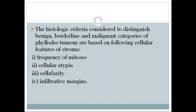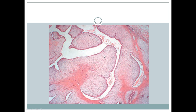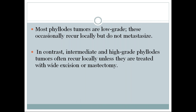The categories are distinguished based on stromal cellular features: frequency of mitosis, cellular atypia, cellularity, and infiltrative margins. More frequent mitosis, more cellular atypia, higher cellularity, and infiltrative margins indicate malignant phyllodes tumor. Less mitosis, less atypia, less cellularity, and absence of infiltrative margins indicate benign phyllodes tumor. This microscopic picture shows stromal overgrowth with compressed leaf-like ducts having cellular stroma.